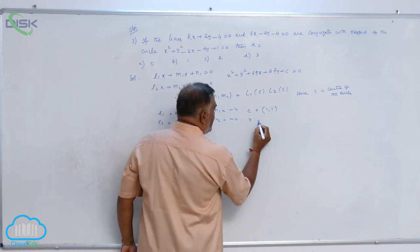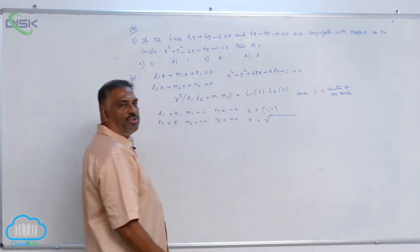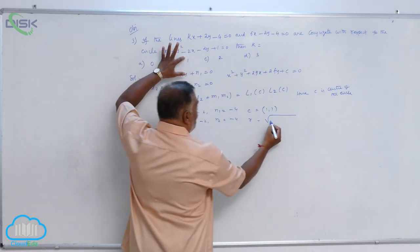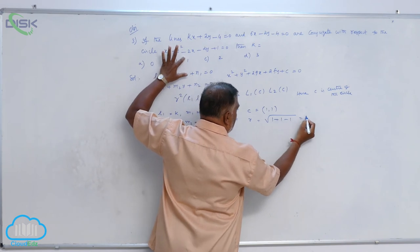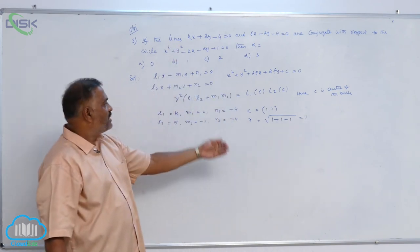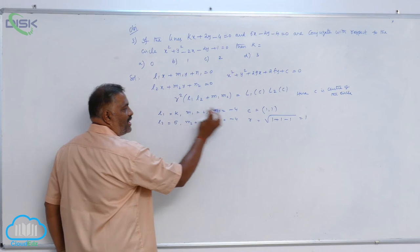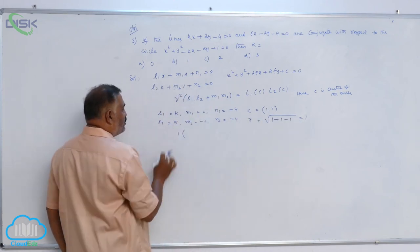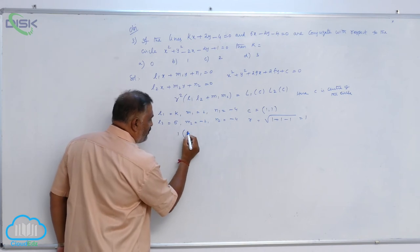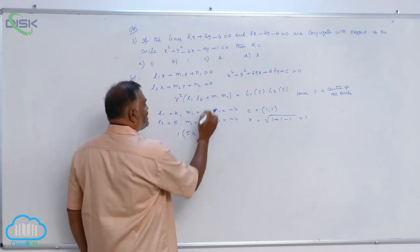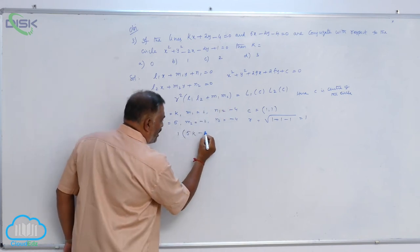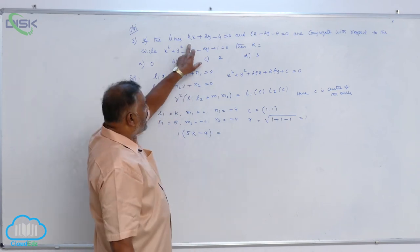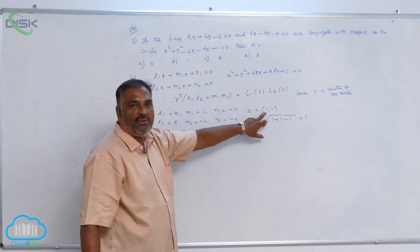Now, radius is equal to, you know that root of g square plus f square minus c, this is 1 plus 1 minus 1, that is 1. Now, substitute the values: r square, that is 1 into l1l2, k into 5, 5k plus m1m2 minus 4 equals, now take the first line and substitute the point 1 comma 1.